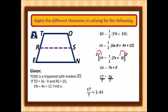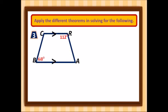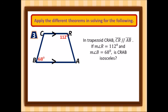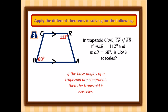Third problem: In trapezoid CRAB, CR is parallel to AB. The measure of angle R is 112° and the measure of angle B is 68°. Is CRAB isosceles? Recall that a trapezoid is isosceles only if its base angles are congruent. That's all for today — thank you so much, Grade 9.